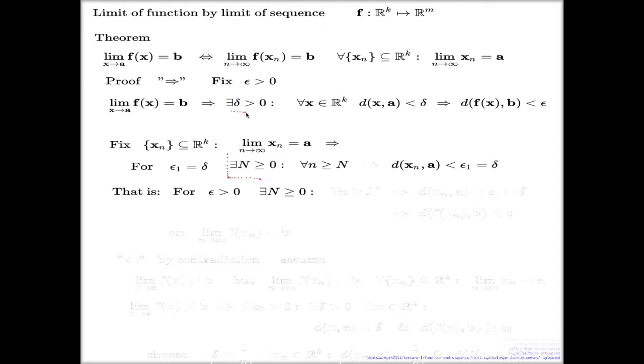First we built delta, and then we built n based on that delta, such that for every n after that index, this is true, and by implication this is true as well from here.